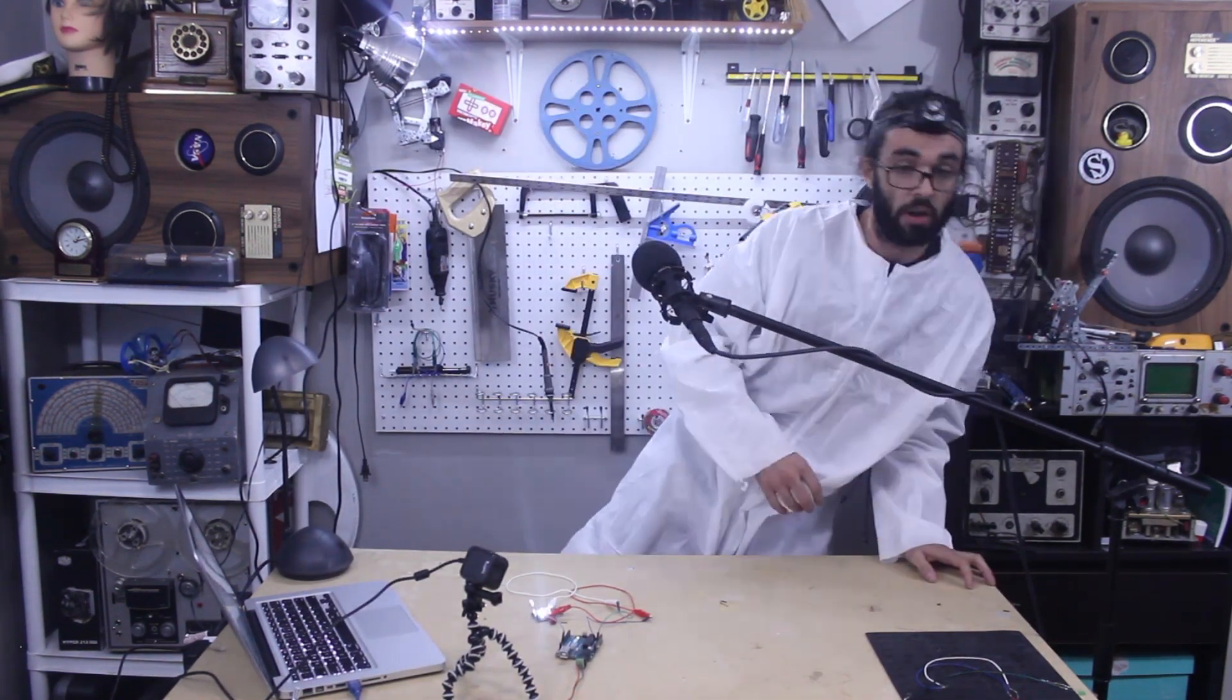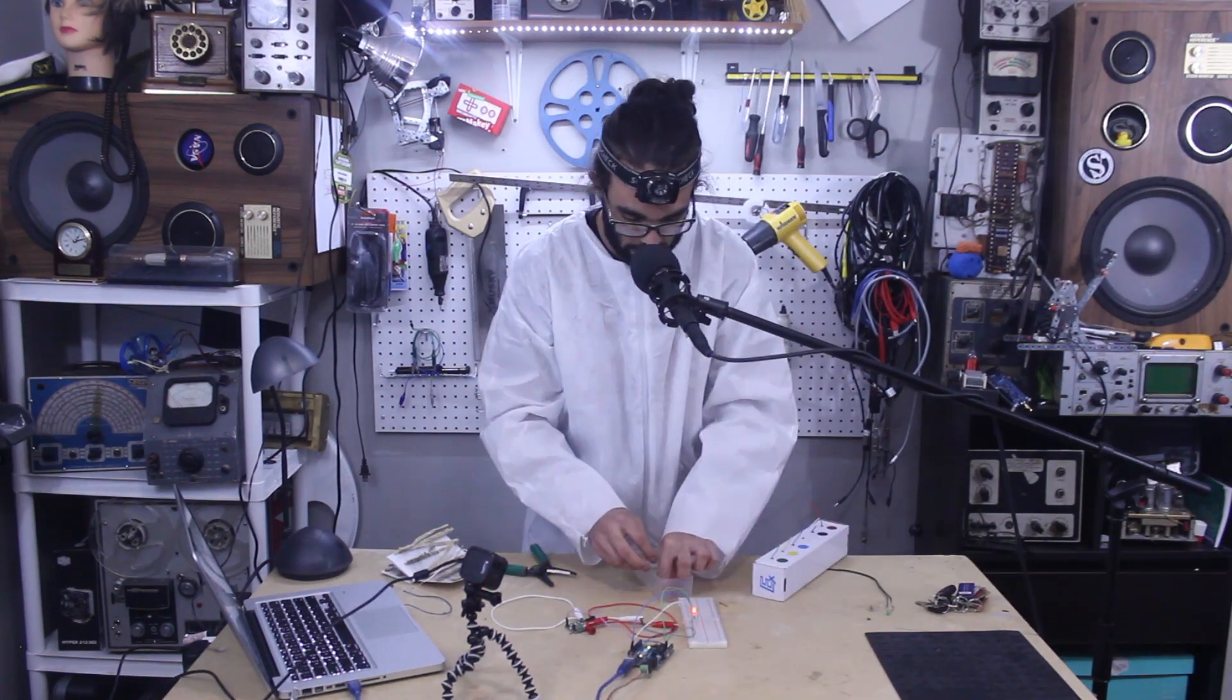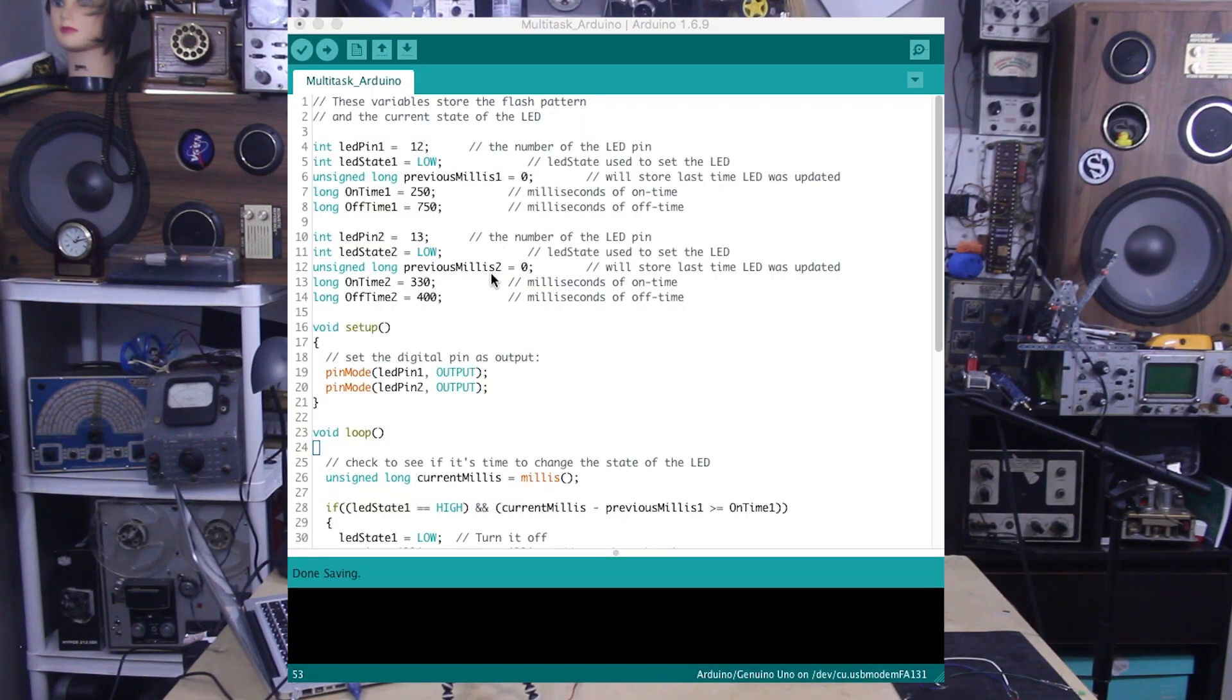Now that we got rid of that delay, we can get two LEDs to blink completely independently of each other at two completely separate rates by repeating the same process with a few different named variables.